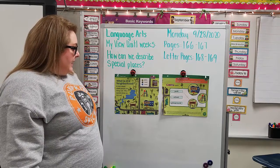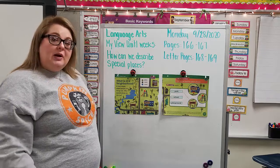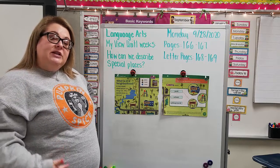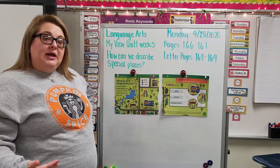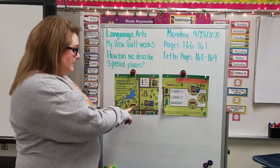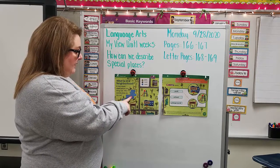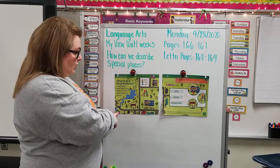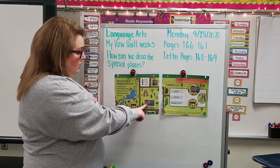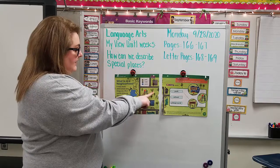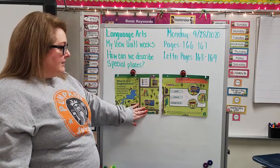A map shows where places and things are. What special places do you see? Take a moment, pause the video if you need to, and look at the map. I see a park and it looks like maybe there's a trail. There's maybe a pond, lake, or stream. I see some houses, a school, a playground, lots of trees, and more houses over here.